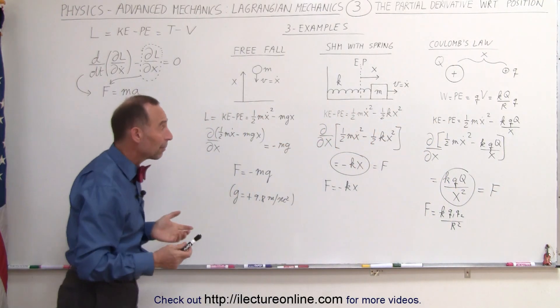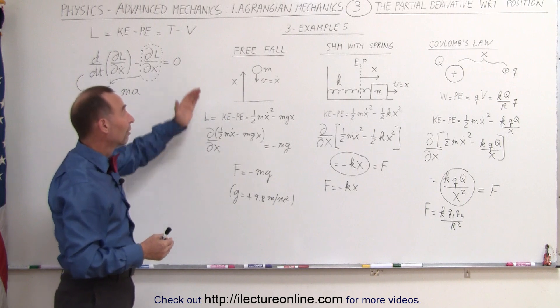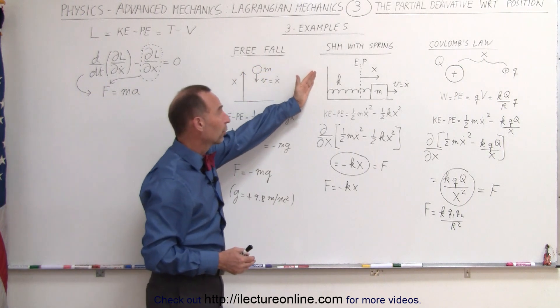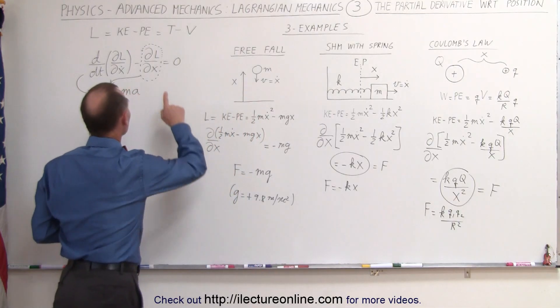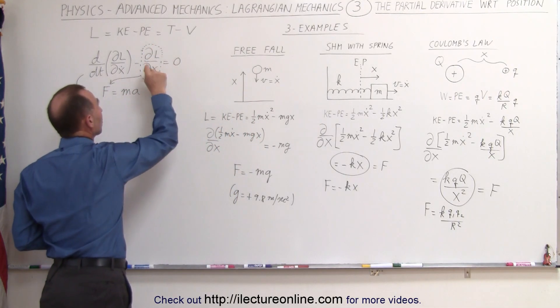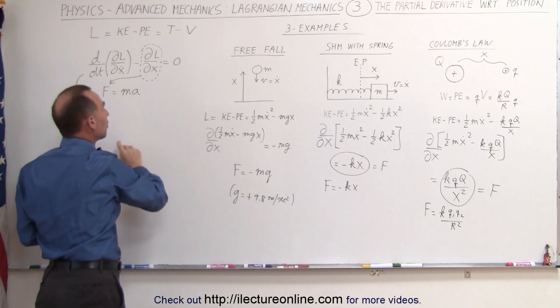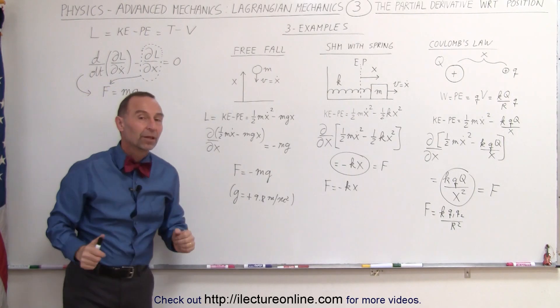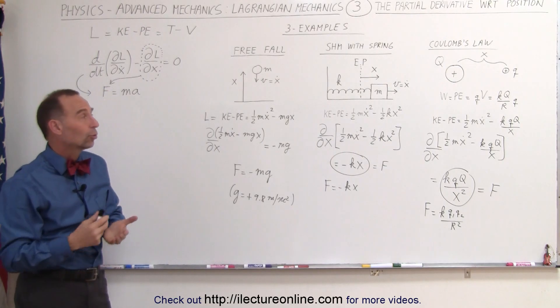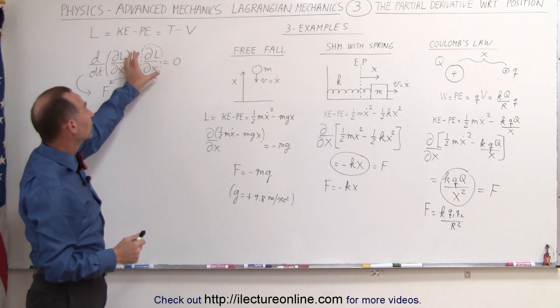So here you can see three different examples that you're probably very familiar with. Free fall, simple harmonic motion with a spring, and Coulomb's Law. In each case, when we take the partial derivative of the Lagrangian with respect to position, we get the force component of the f equals ma equivalent of this particular equation. So now you see how the Lagrangian works. This portion here gives you the force.